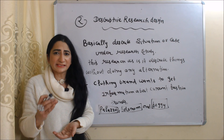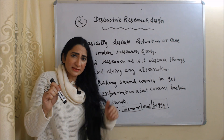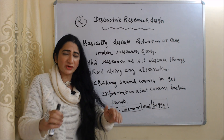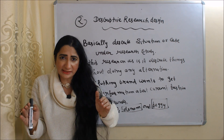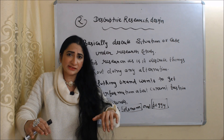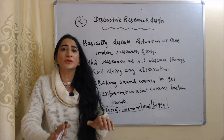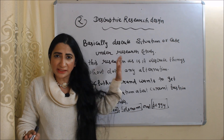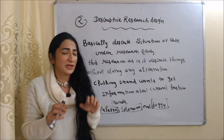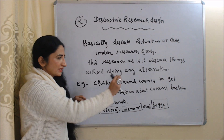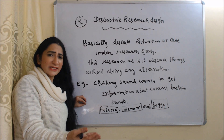The second type of research design is descriptive research design. Descriptive research describes a situation or case under study, and this type of research describes things as they are without doing any alteration. For example, a clothing brand wants to get information about current fashion trends so that they can produce accordingly.